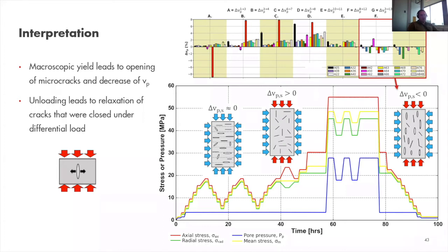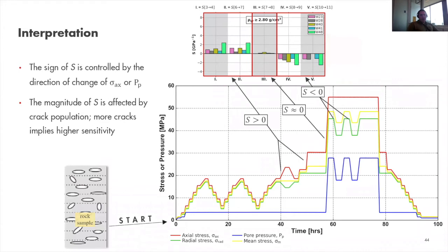Regarding the S-values: the sign of the stress or pore pressure sensitivities is controlled by the direction of change of axial stress or pore pressure — negative values arise because we decrease pore pressure. Using actual effective stress would yield positive values for these categories as well. We postulate that the magnitude of S is affected by crack population: more cracks implies higher stress or pore pressure sensitivity.